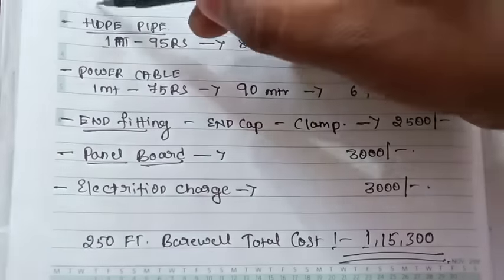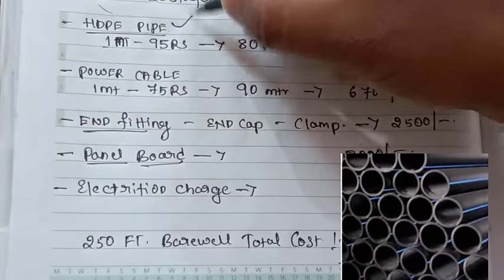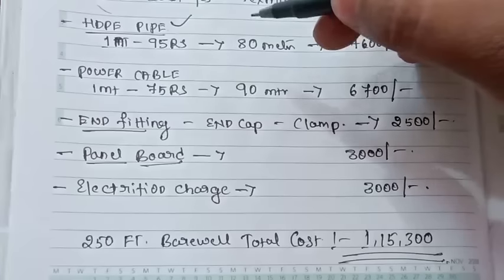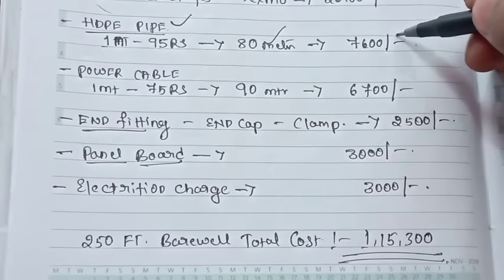Next, we have HDPI pipe. The HDPI pipe is 95 rupees per meter. For 250 feet, which is about 80 meters, this costs 7,600 rupees.